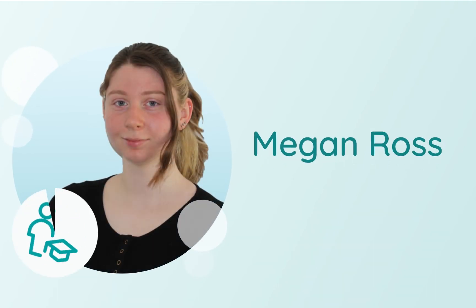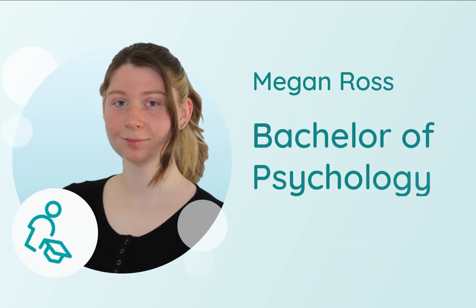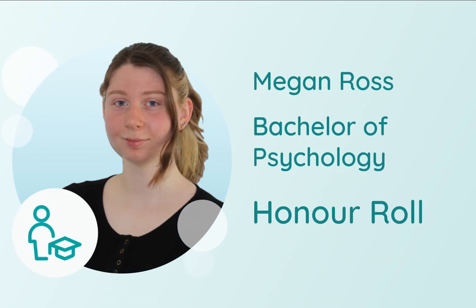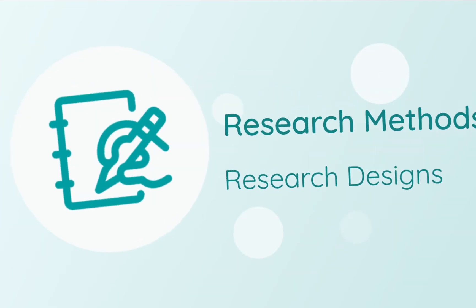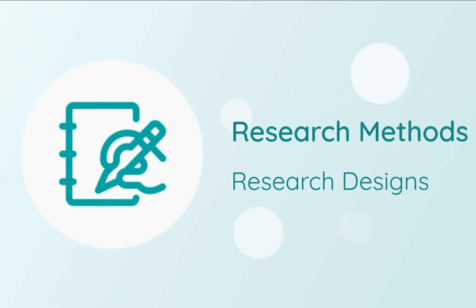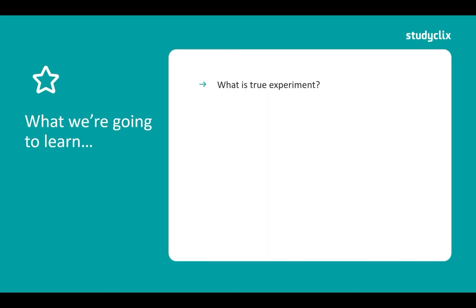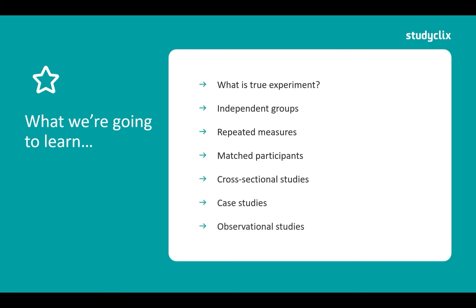My name is Megan Ross and I'm studying a Bachelor of Psychology at Monarch University. I was on the VC Honor Roll of Psychology, and today we're going to be going through some research methods, specifically different research designs. In this video we're going to learn what is a true experiment, then go through the three experimental designs — independent groups, repeated measures and matched participants — and then the three non-experimental designs: cross-sectional, case studies and observational studies.